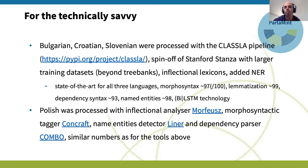Given that all these tools are based on machine learning, the tools are only as good as the data they are trained on. Stanza originally uses only treebanks for training, so we extended the training data with additional data that is not parsed but still contains very useful information. We also included inflectional lexicons, which are highly useful for Slavic languages, and we added named entity recognition to the tool.